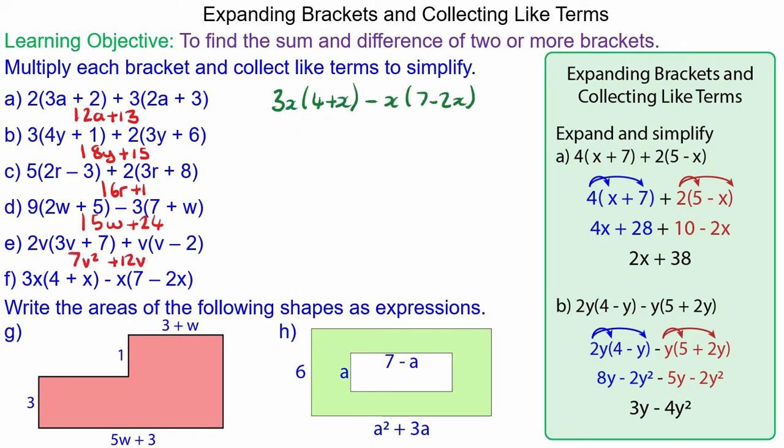For question f we have 3x times 4 which is 12x, 3x times x which is 3x squared, negative x times 7 which is negative 7x, and negative x times negative 2x which is positive 2x squared. Collecting the like terms, we've got 12x take away 7x which is 5x, and the 3x squared plus 2x squared which is 5x squared.